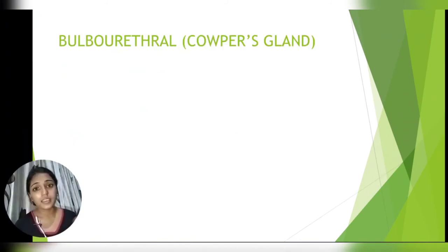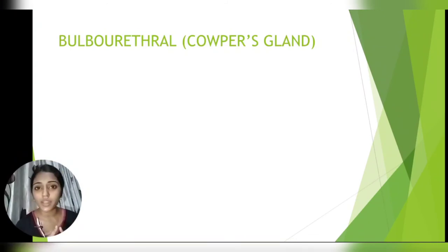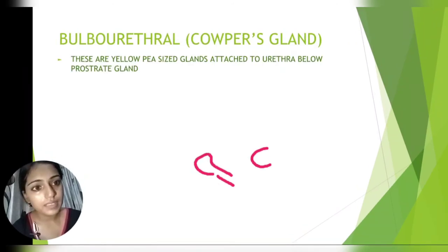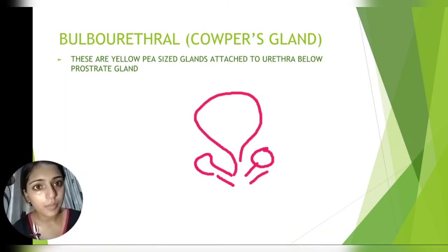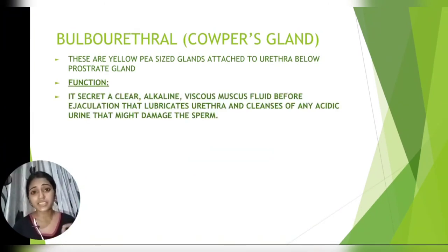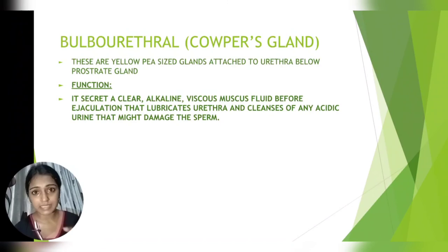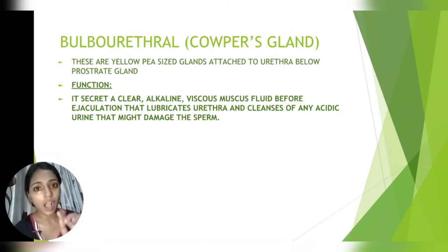The last gland associated with the male reproductive system is the bulbourethral gland, also called Cowper's gland. These are yellow pea-sized glands attached to the urethra below the prostate gland. Their function is to secrete a clear alkaline viscous mucus fluid before ejaculation, which lubricates the urethral passage and cleanses any urine that might harm the sperm.